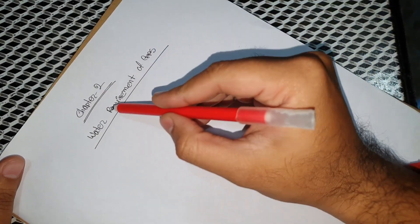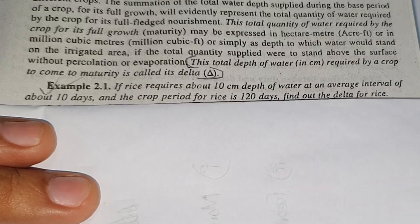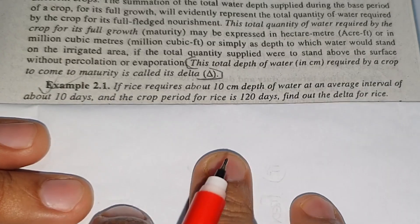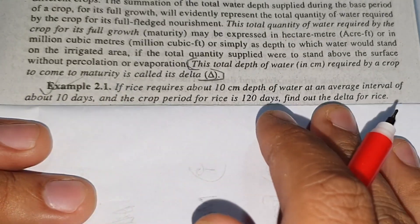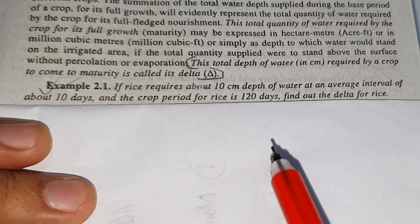Chapter 2 is called Water Requirements of Crops. This chapter is about the math. We are going to talk about the math and the math of the math.